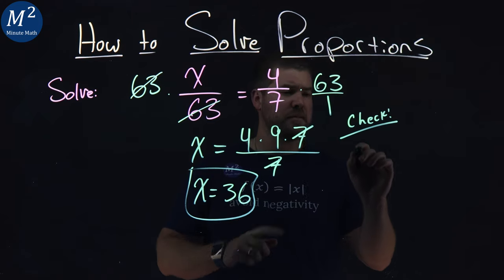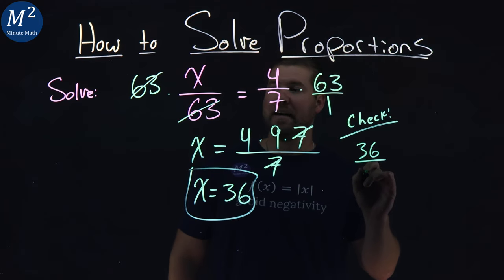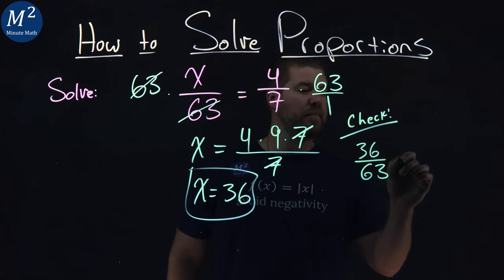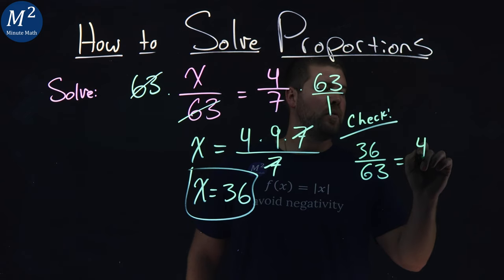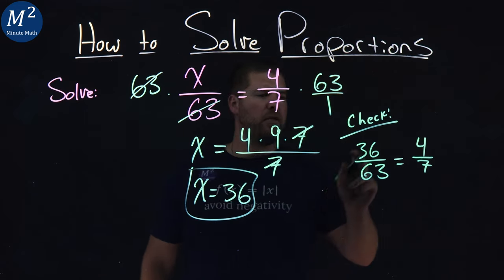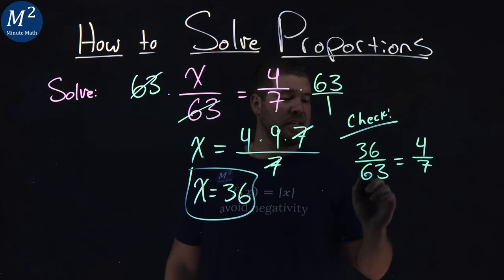But instead of x, I'm putting a 36. 36 over 63 is equal to 4 over 7. Now, 36 is 9 times 4.